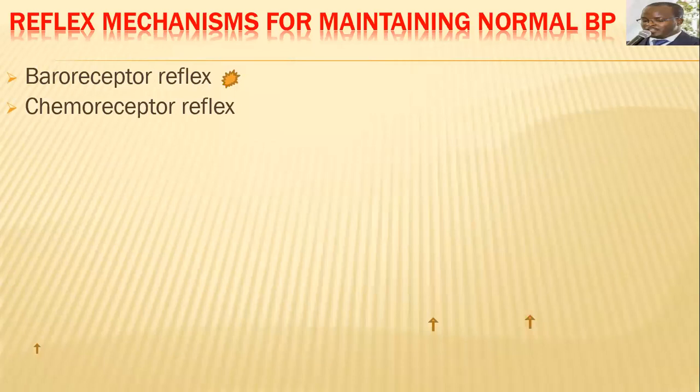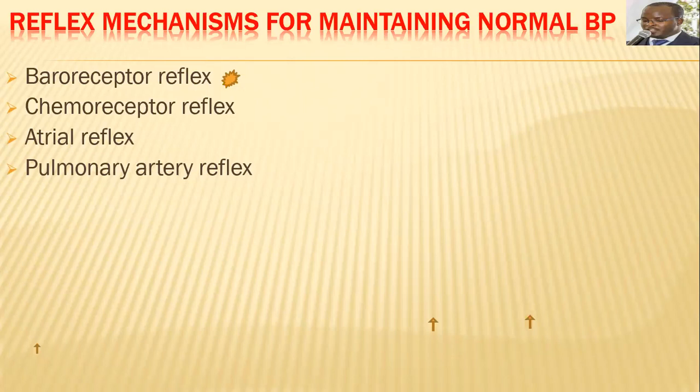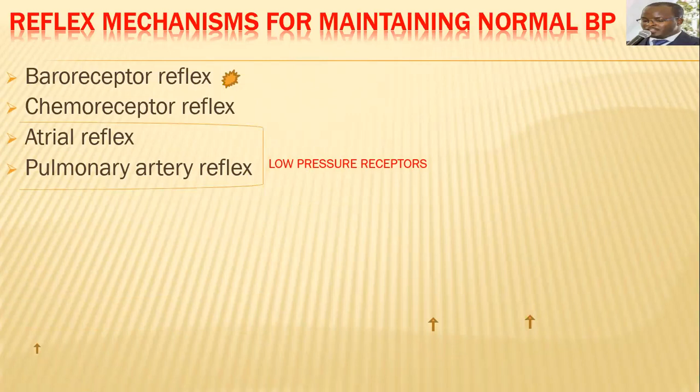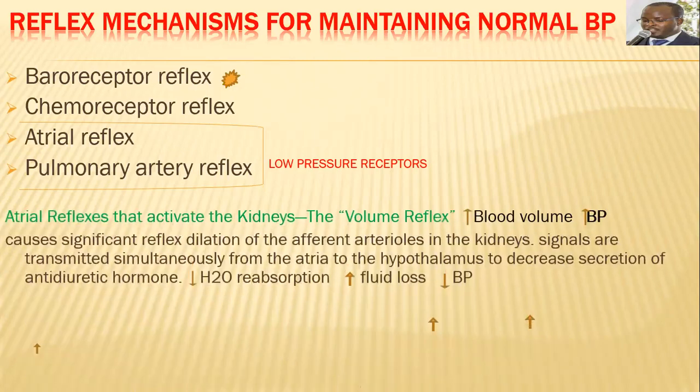The neural reflexes involved in blood pressure regulation are: baroreceptor reflex (high pressure receptor, most important), chemoreceptor reflex (responds to chemicals), atrial reflex (low pressure receptor), and pulmonary artery reflex (low pressure receptor). The baroreceptor reflex is the primary mechanism, while atrial and pulmonary artery reflexes are low-pressure receptors.